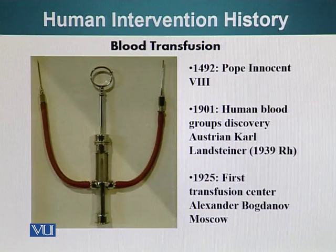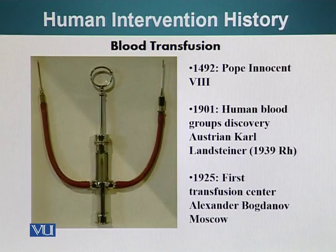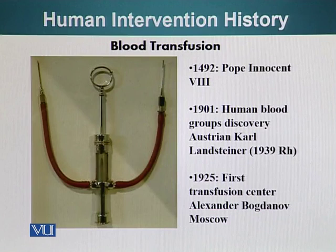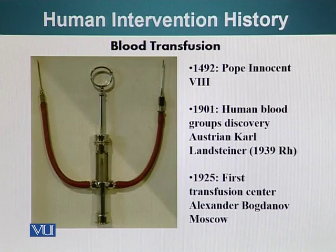Let us briefly look at the human intervention history. The first tissue that was transplanted was blood. The earliest record I could find is 1492 — Pope Innocent VIII got sick and was given a blood transfusion. There are variable accounts of whether he drank the blood or received a transfusion. The source of blood was three young boys. Unfortunately, not only did the Pope die, but the three young donors also passed away during the process or shortly after.